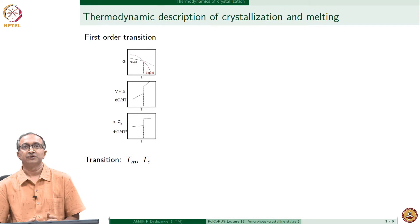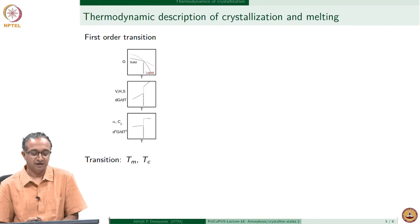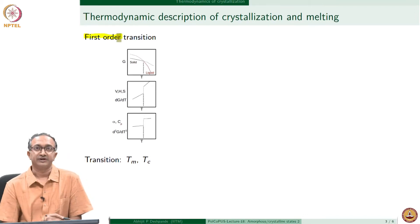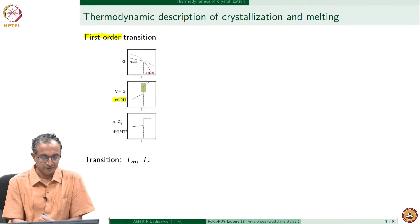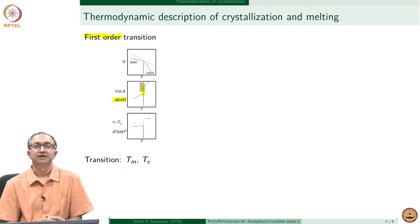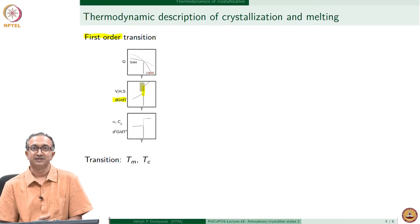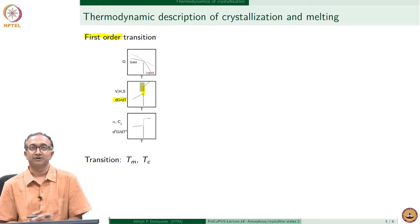The thermodynamic description is based on the Gibbs free energy for a material. The diagrams routinely used to describe a transition show that crystallization is an example of a first-order transition, termed so because there is a discontinuity in the first derivative of Gibbs free energy. There are first-order transitions and second-order transitions. The glass transition temperature, which we will look at in upcoming lectures, appears to have some signatures similar to second-order transitions.